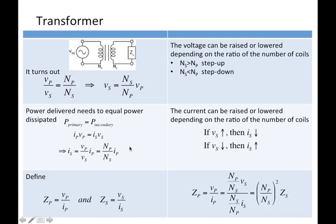If you increase the secondary voltage — meaning you have a step-up transformer — then the current through the secondary is going to be lower. Or if you lower the voltage — a step-down transformer — then the current through the secondary will be higher. That's to keep the power the same: if you increase the voltage, you decrease the current; if you decrease the voltage, you increase the current.